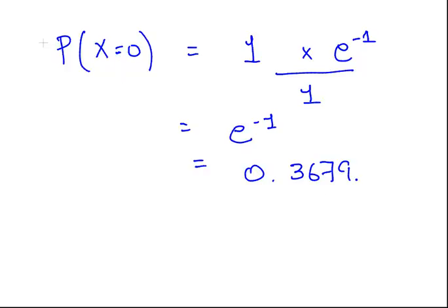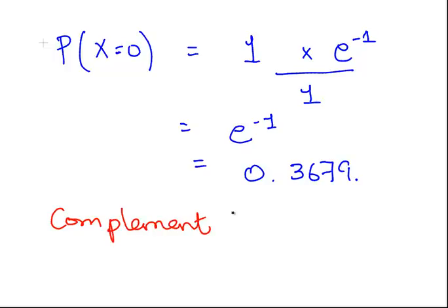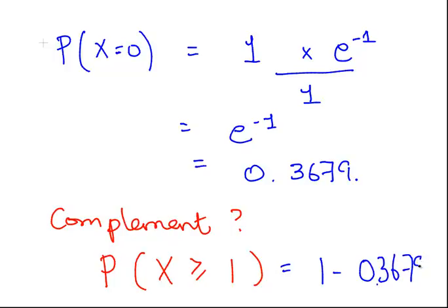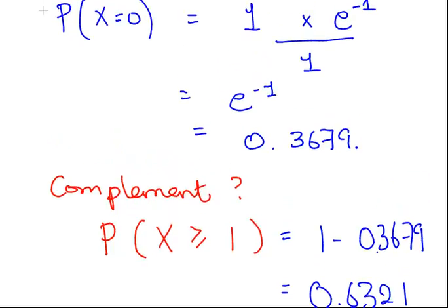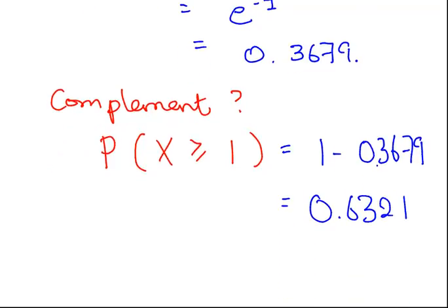I'm going to make a slight digression. The complement of P(X = 0) is the probability of X greater than or equal to 1. That is equal to 1 minus 0.3679, which is roughly 0.6321. It's always quite useful to think of complements — the probability of nothing happening versus the probability of something happening are complements of each other.